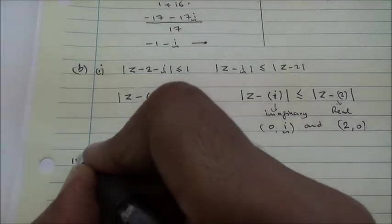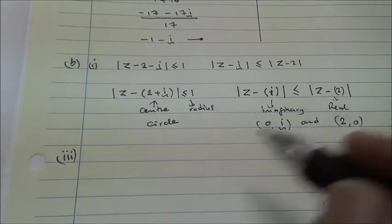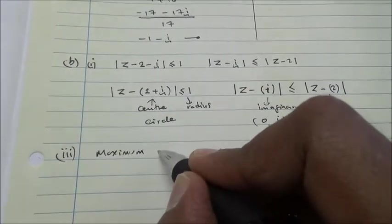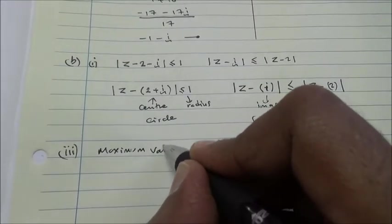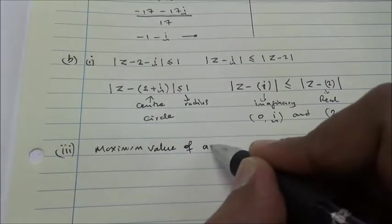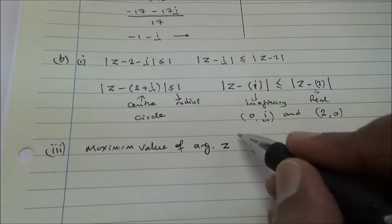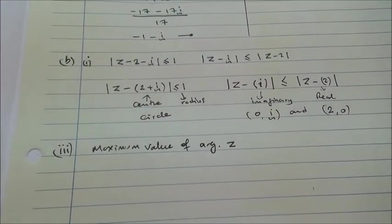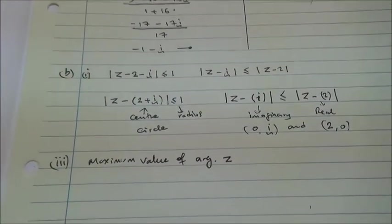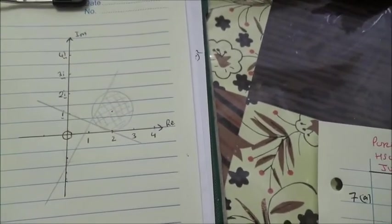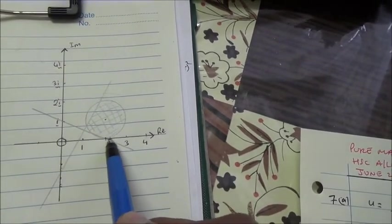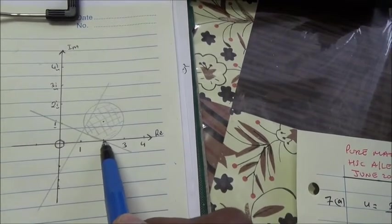Now, for the third part, we are requested to calculate the maximum argument, maximum value of argument z for points lying in the shaded region. For points lying in the shaded region, we're gonna look at the diagram. We're gonna need the tangents of the circle. This is one tangent that touches the circle.